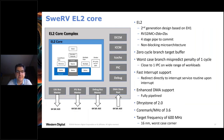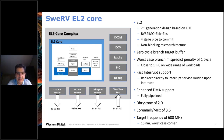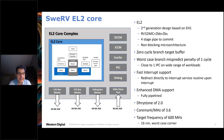The SweRV EL2 core follows the RISC-V 32-bit IMC architecture — integer, multiply, and compressed instructions — and also supports ZBB and ZBS bit manipulation instructions. It has a four-stage pipe to commit, worst-case branch mispredict of one cycle, and supports fast interrupts and enhanced DMA support. It achieves a CoreMark per MHz of about 3.6, very close to the theoretical maximum for a single-issue pipeline. The target frequency is 600 MHz in 16nm TSMC technology.